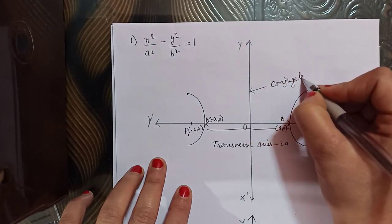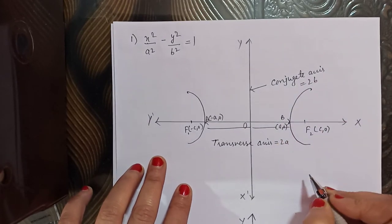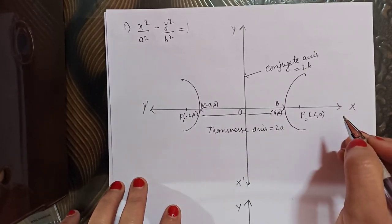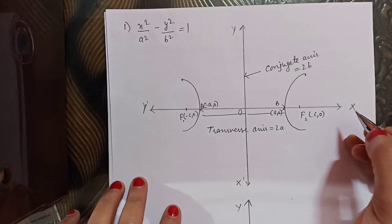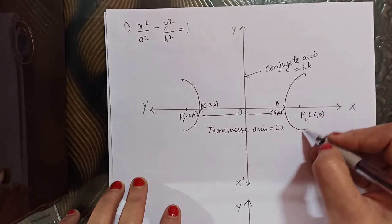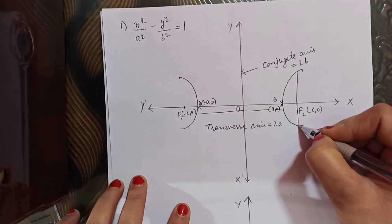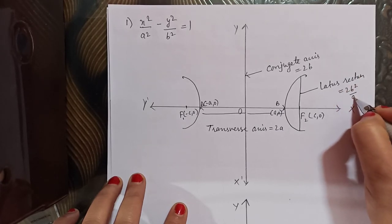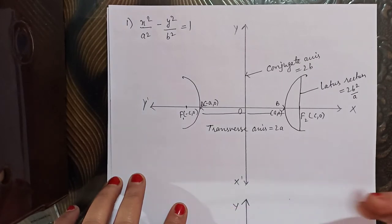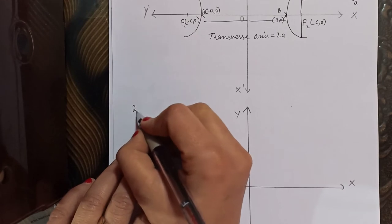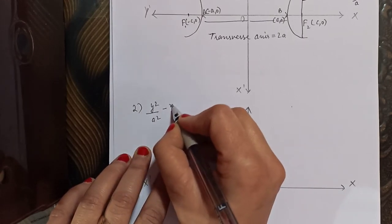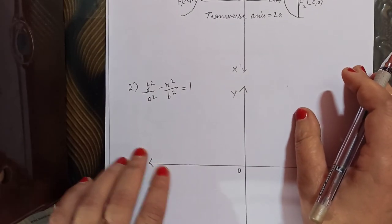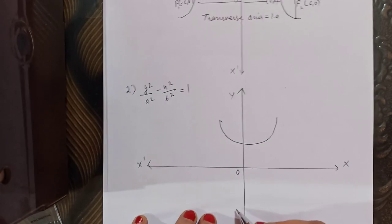The eccentricity formula is the same as what we used for ellipse: e = c/a. The length of the latus rectum is 2b²/a. The second type of hyperbola has equation y²/a² − x²/b² = 1. Since y is positive here, the hyperbola is formed along the y-axis.